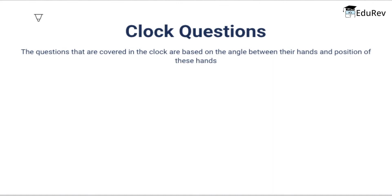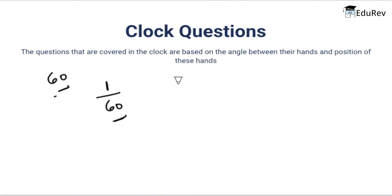Now let's move on to clock questions. A clock is an instrument used for maintaining and indicating the current time. It usually consists of an hour, minute, and second hand. Questions on clocks are based on these hands and their positions — specifically the angle between the hands, their relative positions, and sometimes faulty clocks or time lost and gained. The basic facts to remember: every hour has 60 minutes, every minute has 60 seconds.